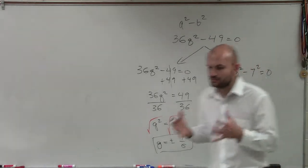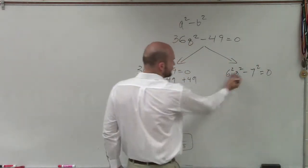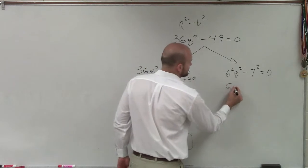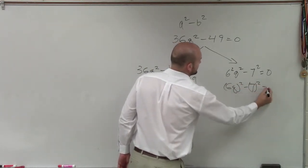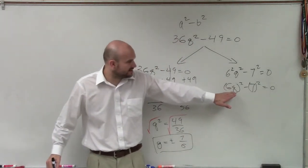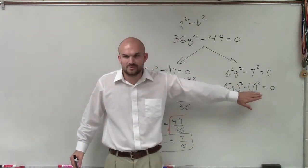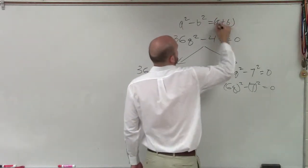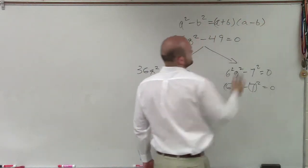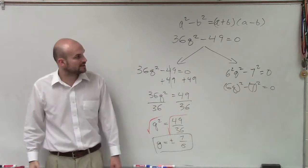Now what I need to do, though, is see, can I write this as a squared term? Well, 6 squared q squared is 6q squared minus 7 squared, equals 0. So ladies and gentlemen, do I have a squared term minus another squared term? Yes. So therefore, I can factor it as a plus b times a minus b. Because that's the definition of our difference of two squares.